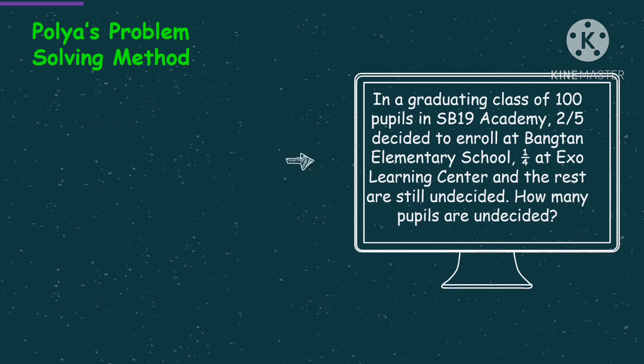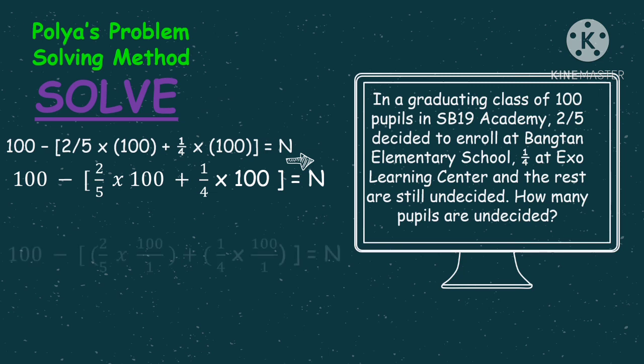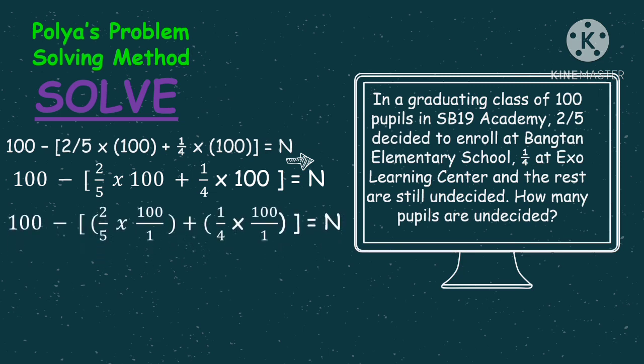Let's now solve for the solution. We have 100 minus (two-fifths times 100 plus one-fourth times 100) is equal to N. Since we are dealing with multiplication of a whole number and a fraction, yung 100 i-express natin siya as a fraction using one as the denominator. Then proceed on multiplying fractions, unahin muna natin lahat ng nasa loob ng parentheses.